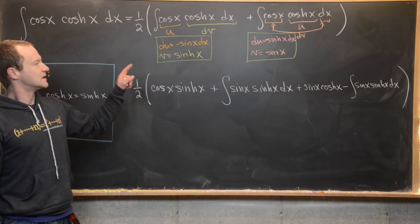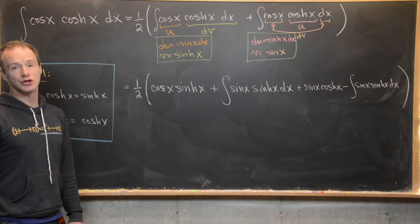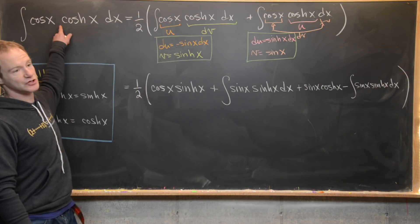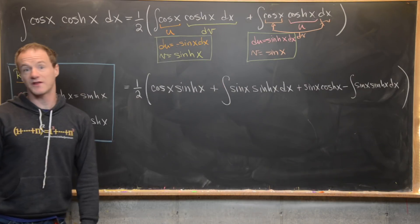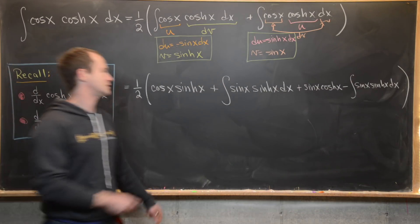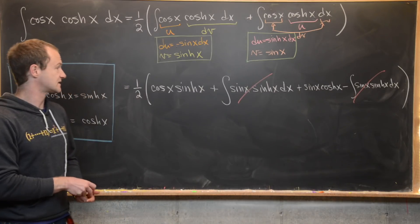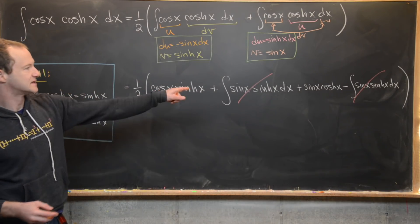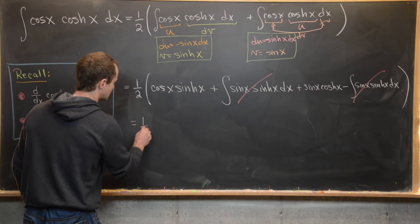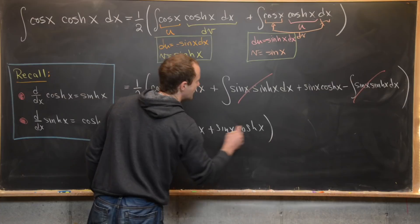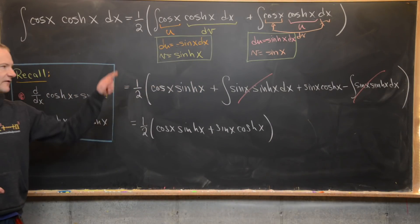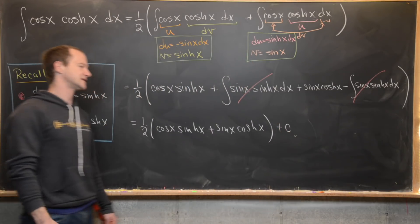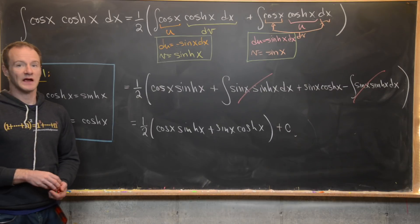Notice that by doing integration by parts these two ways, we created an integral and its opposite — those cancel. We're left with one half times cosine x times hyperbolic sine x, plus sine x times hyperbolic cosine x, plus a constant C. And that's a good place to stop.